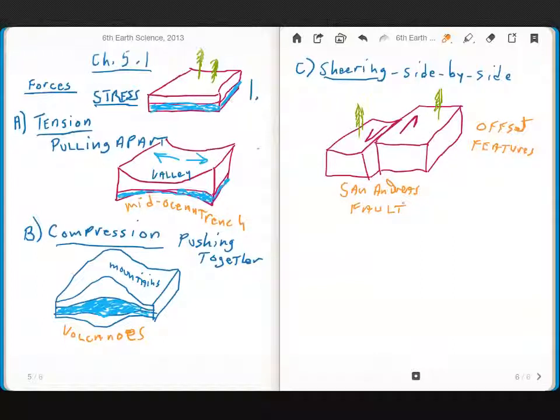So the San Andreas Fault is really a combination of compression plus shearing.